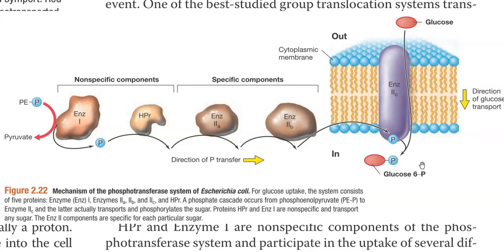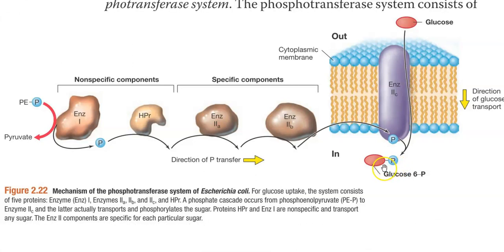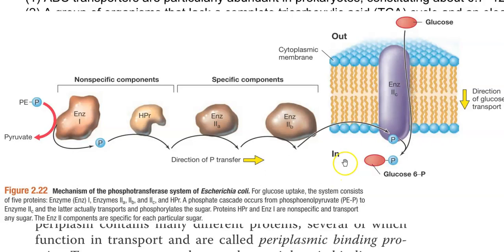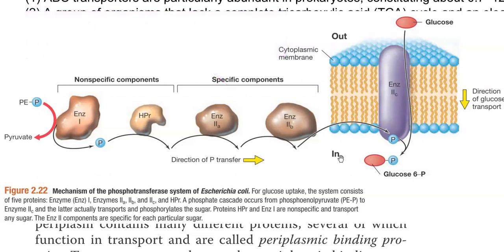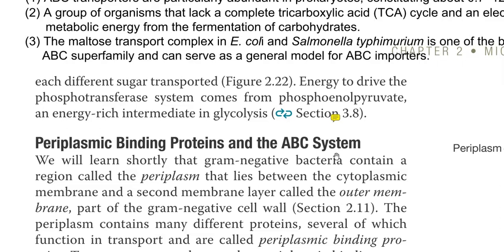A protein called HPR, the enzyme that phosphorylates HPR — that is, enzyme 1 — and enzyme 2A are all cytoplasmic proteins. However, enzyme 2B lies on the inner surface of the cell membrane and enzyme 2C is an integral membrane protein. HPR and enzyme 1 are non-specific components of the phosphotransferase system participating in the uptake of different sugars. Thus, several versions of enzyme 2 exist, one for each of the different sugars transported inside the cell. The energy for this transport system is derived from energy-rich compounds such as phosphoenol pyruvate.